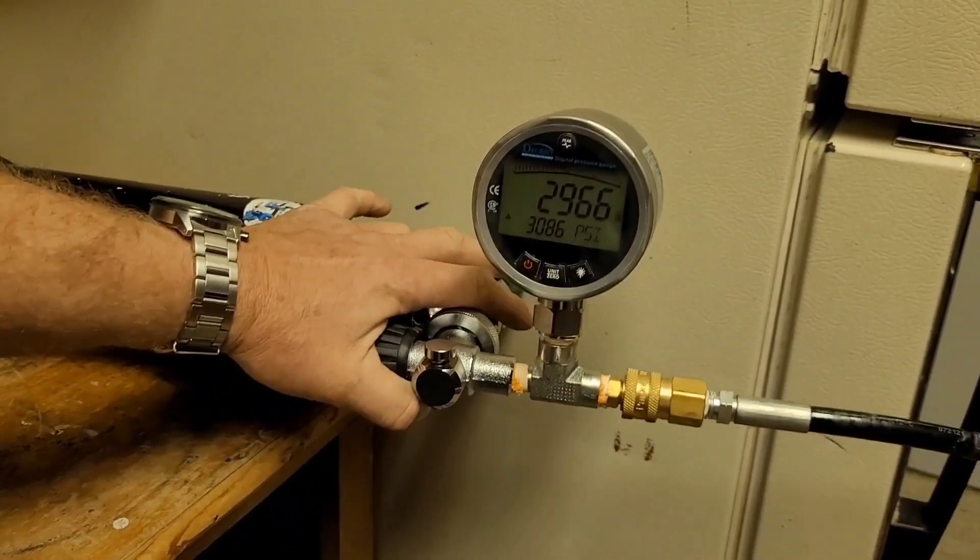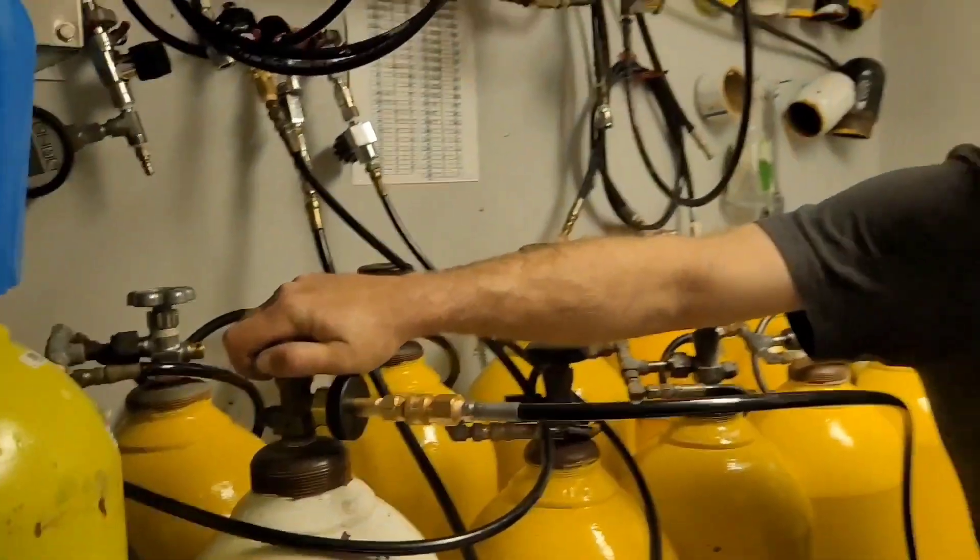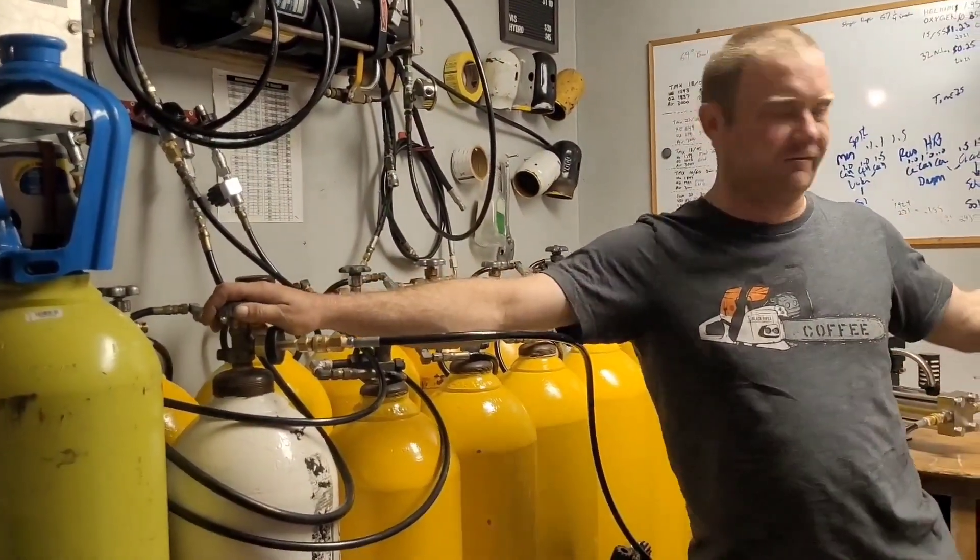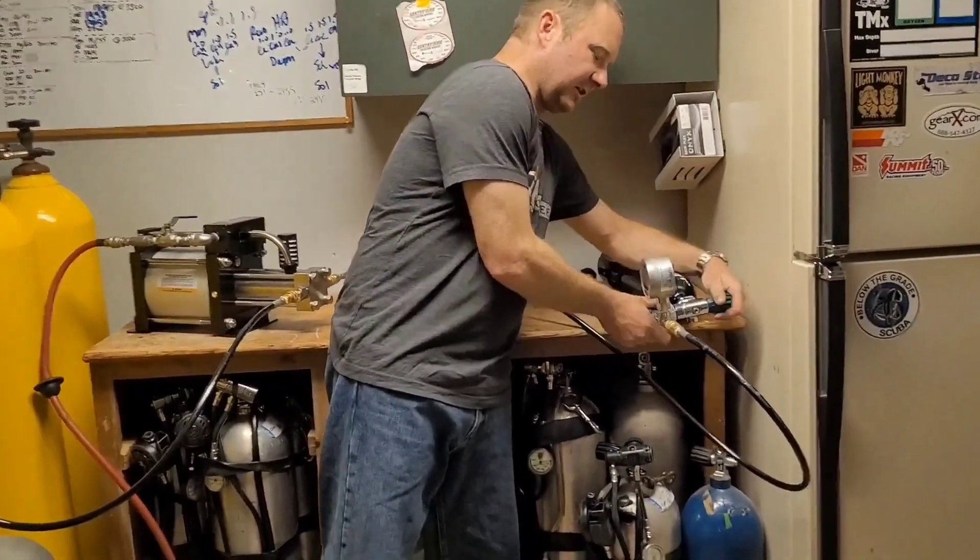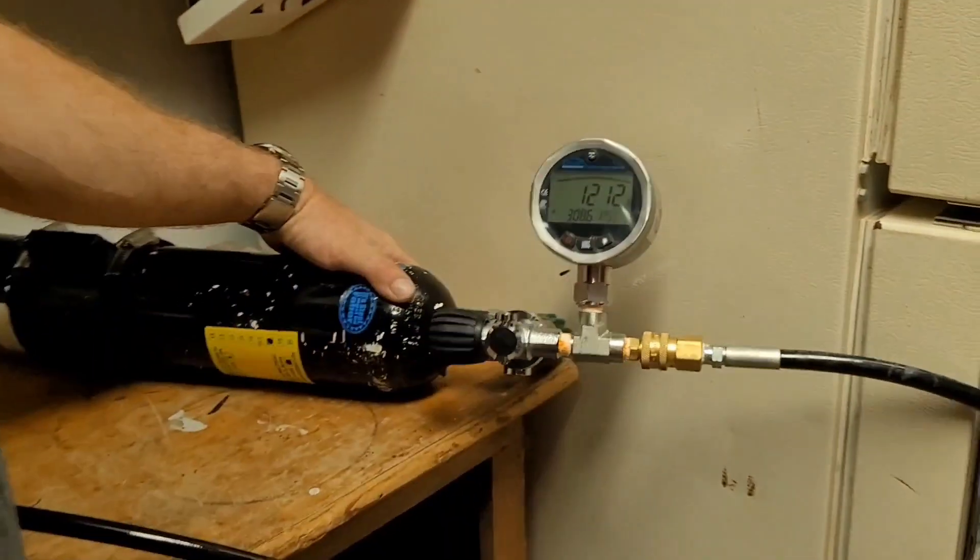So we've got this connected. But before we open these, we're going to go back over to our oxygen tank. We're going to shut that valve off because again, we don't know what the pressure is and we don't want a runaway fill. Now we can open both the isolator and the tank and see where we're at. In this case, we're 1200 psi.